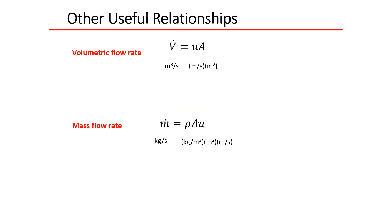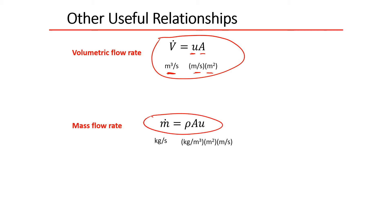Let's go over a couple of other useful relationships. Volumetric flow rate V-dot equals velocity times area — that's meters per second times meters squared, giving meters cubed per second. And mass flow rate equals density times area times velocity, giving kilograms per second.